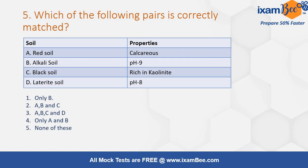Which of the following pairs is correctly matched? The correct answer is only option B — alkali soil has a pH of 9. Red soil is not calcareous; black soil is not rich in kaolinite but in montmorillonite. Laterite soil has a pH range of 4.5 to 6.5 and is somewhat acidic. Red soil mainly consists of iron oxide. Alkaline soils are usually calcareous in nature.